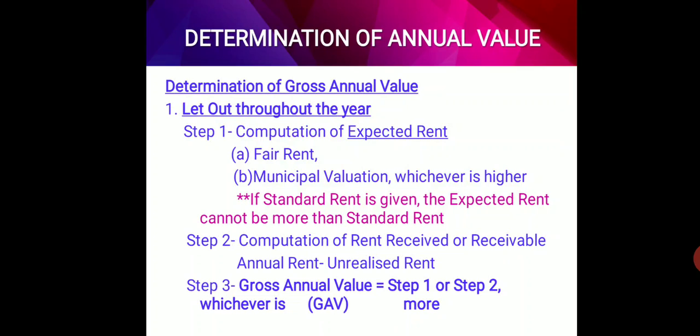In the first case, let us assume the property has been let out throughout the previous year. There are three steps. Step 1 is computation of expected rent: fair rent or municipal valuation, whichever is higher, is taken as expected rent. If standard rent is also given, then expected rent cannot be more than the standard rent — out of expected rent and standard rent, whichever is lower will be considered.